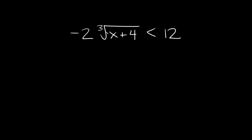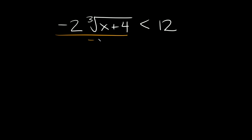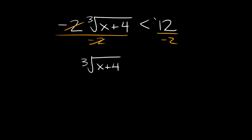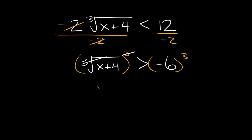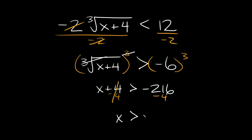Let's try one more. We have negative two times the cube root of x plus four is less than 12. The first thing we can do is get rid of the negative two by dividing both sides by negative two. Those cancel out, leaving the cube root of x plus four. Whenever we divide by a negative number we have to flip our sign, so we get greater than negative six. Then we cube both sides — those cancel out — and we're left with x plus four is greater than negative 216. We subtract four from both sides, so x is greater than negative 220.